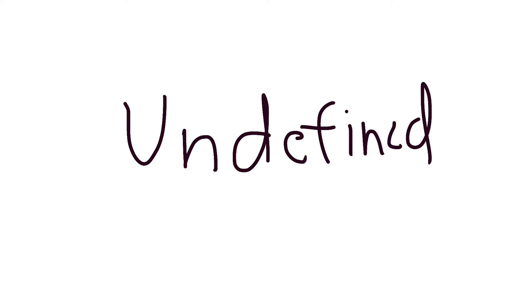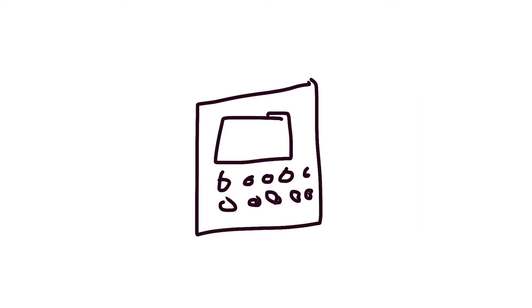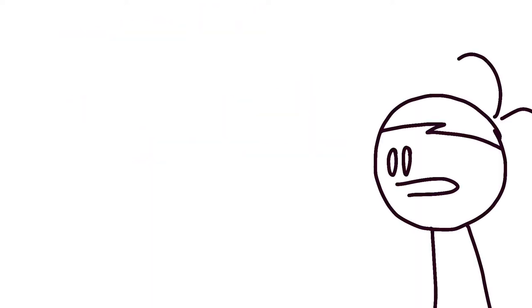So the first thing I did was I searched up on Google 'zero divided by zero.' One result said 'undefined.' So our first answer is undefined. And now we need to find more answers to get closer and closer to the number. The second thing I did was I put it in a calculator, and it came out as error. So we're going to add error as our second answer. We have two answers now, but I don't think these are going to cut it, so we're going to add two more answers to our list.